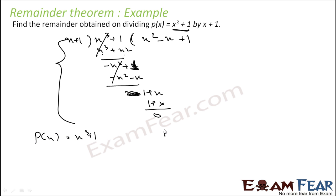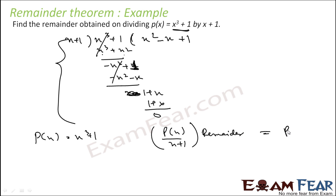Or I know that if p(x) = x³ + 1, the remainder when dividing p(x) by x + 1 is nothing but p(-1). So let's find p(-1): (-1)³ + 1 = 0. So using any of these methods you can find the remainder — using the remainder theorem or by doing a physical division.